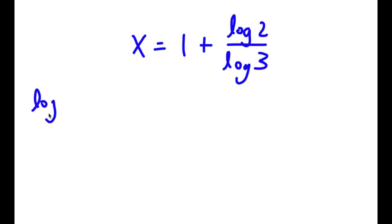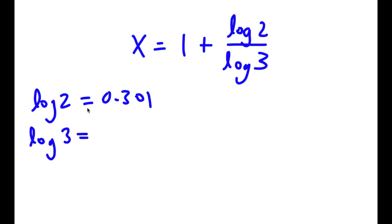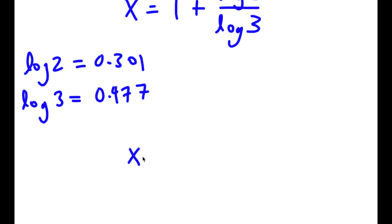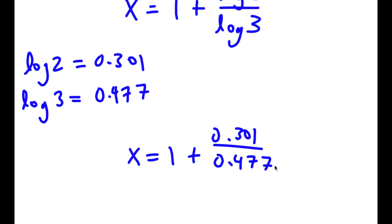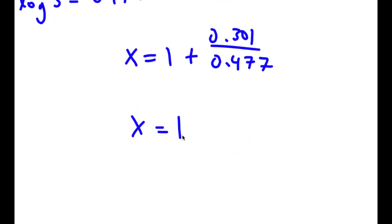Now, log 2 is equal to 0.301 and log 3 is equal to 0.477. So I have x is equal to 1 plus 0.301 over 0.477. So now I have x is equal to 1 plus 0.631, which is equal to 1.631.